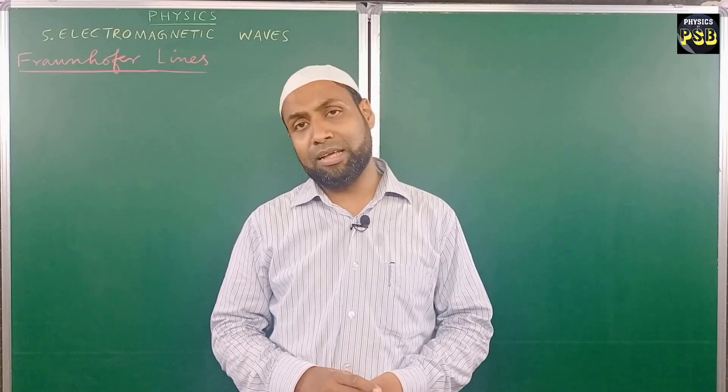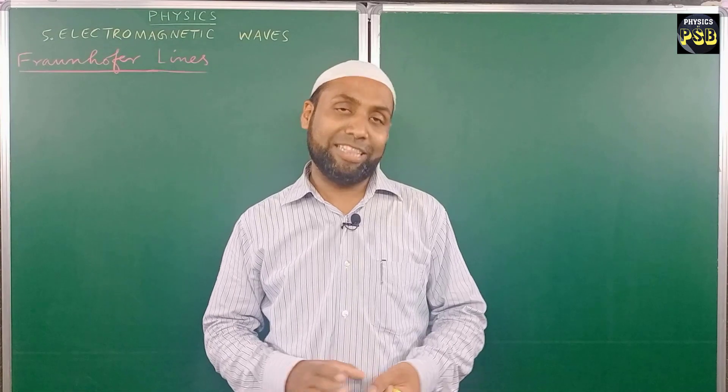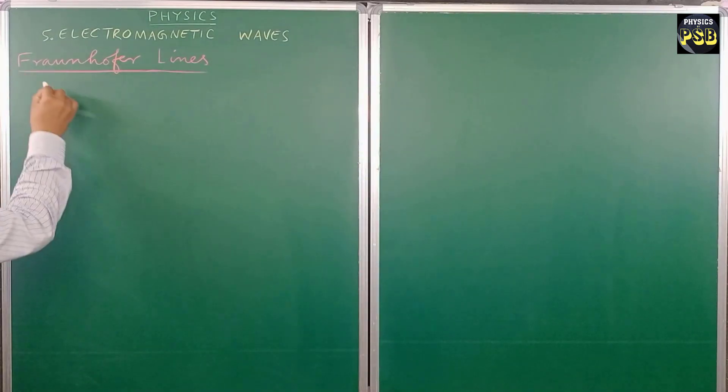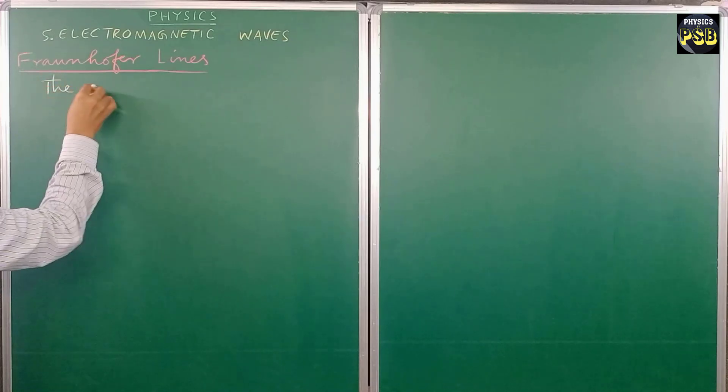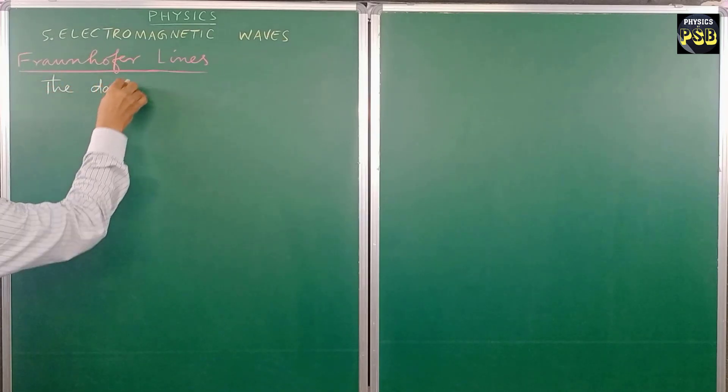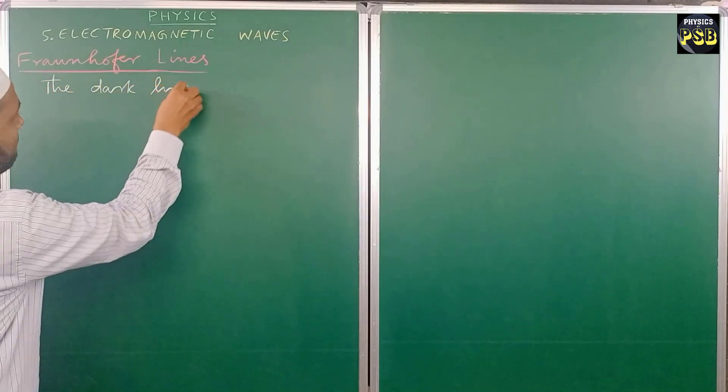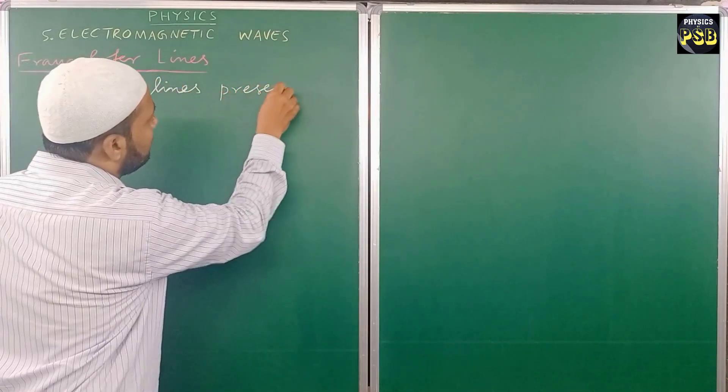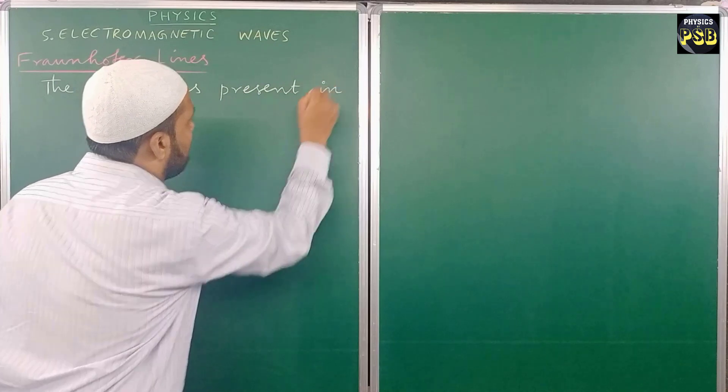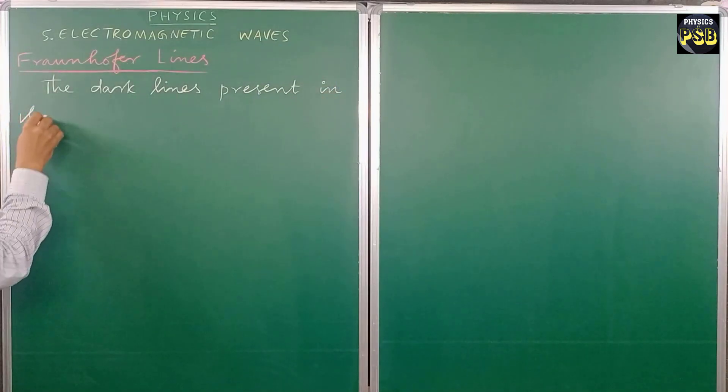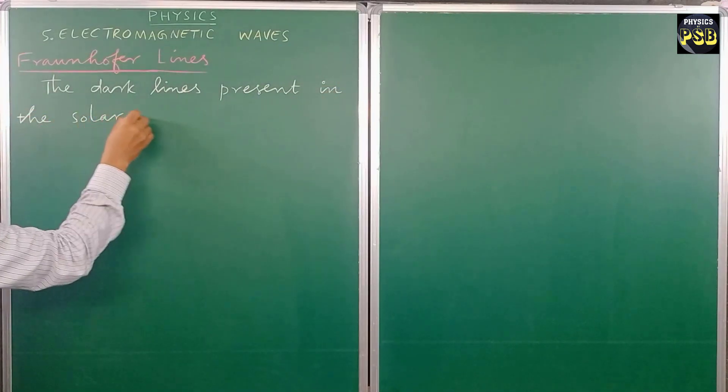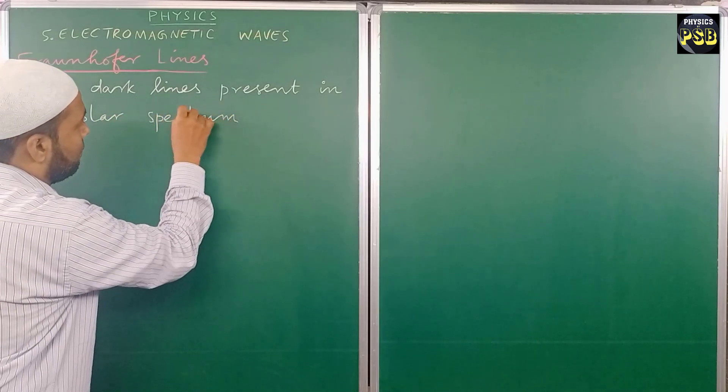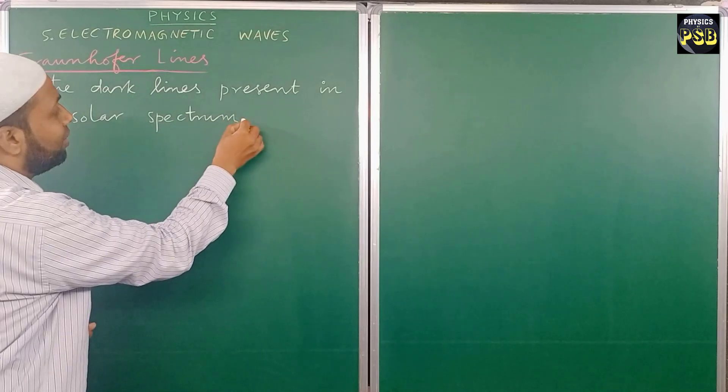How are these lines found? What is the reason behind it? Let's explore it in this video. As I told you earlier, the dark lines present in the solar spectrum are referred to as Fraunhofer lines.